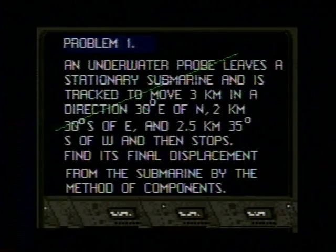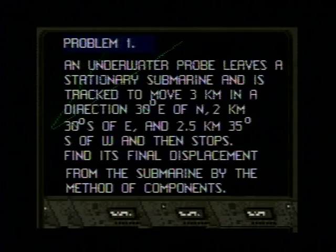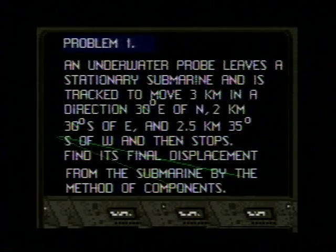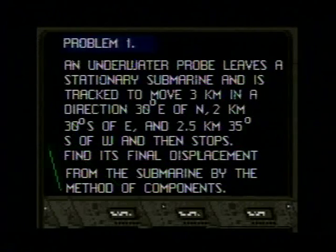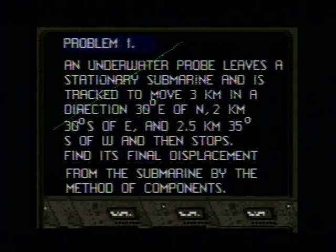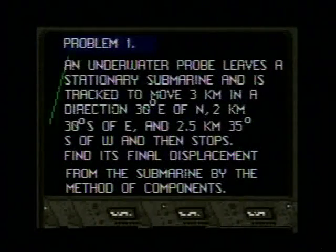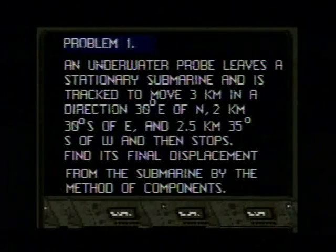We begin now with a review of vectors. Problem number one reads: an underwater probe leaves a stationary submarine and is tracked to move three kilometers in a direction thirty degrees east of north, two kilometers thirty degrees south of east, and two point five kilometers thirty-five degrees south of west, and then stops. Find its final displacement from the submarine by the method of components.